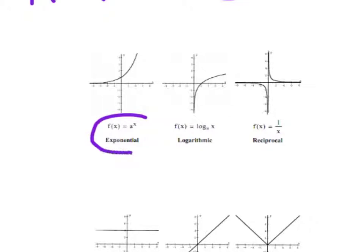Exponential is y equals e to the x, or two to the x — a variable as your exponent. This graph is extremely special. You'll notice that it does not go through zero, zero like our previous functions. Its special point is zero, one, and that's the point that we're going to shift all over. The other thing that's special about exponential is that it should have a horizontal asymptote drawn in every time. We label that asymptote y equals zero.